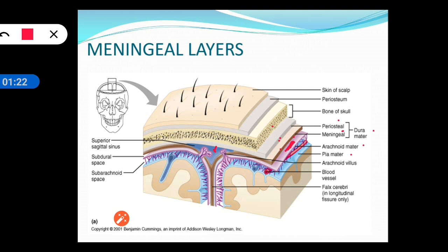There is one more space in between the arachnoid mater and the pia mater, called the subarachnoid space. It mainly consists of cerebrospinal fluid and arteries, so any bleeding that occurs here is arterial.